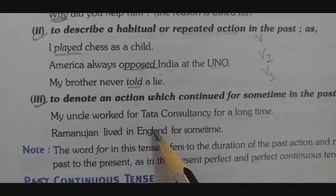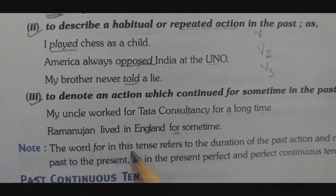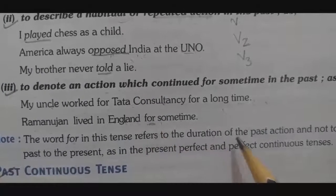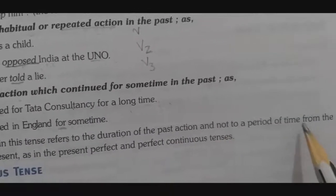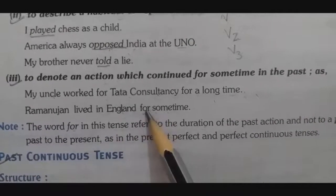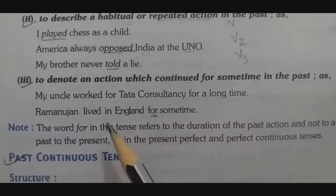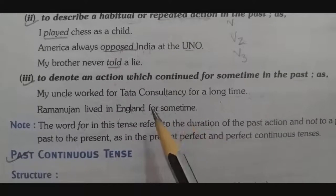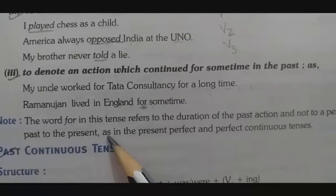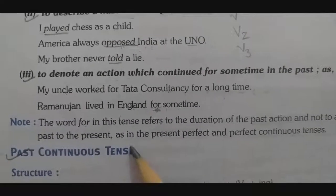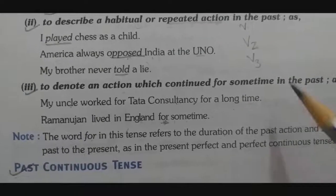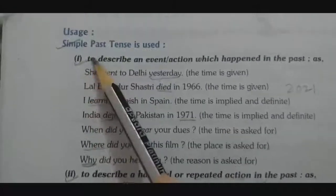The word 'for' shows the duration of the past action and not a period of time from the past to the present — meaning this action was completed in the past, unlike in present perfect or perfect continuous tense where 'for' can extend to the present. All these uses fall under simple past tense.